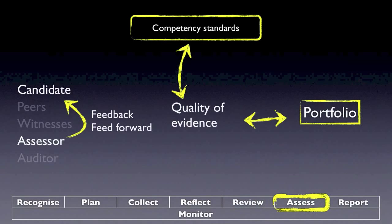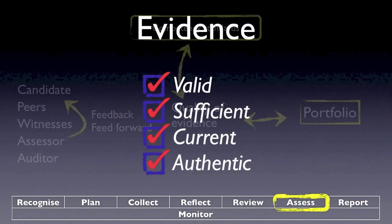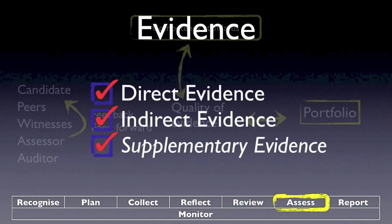The next stage is to assess. The assessor looks at the portfolio and checks the quality of the evidence provided. For that, we have to take into account whether the evidence is valid, sufficient, current, and authentic. Authentic means it is the candidate who produced the evidence and not someone else. Current means it is evidence produced recently — within one year, for example — rather than something that is ten years old. We see three types of evidence.